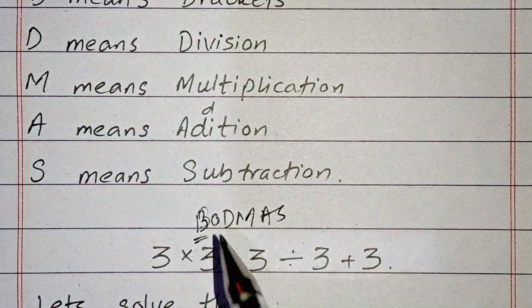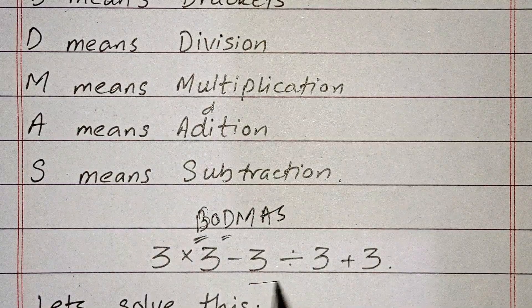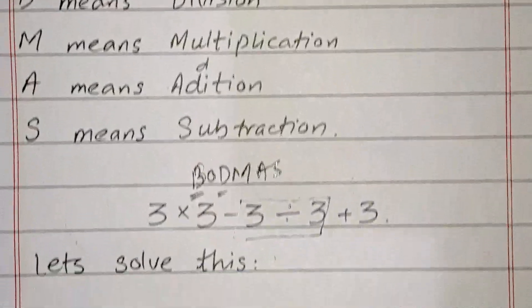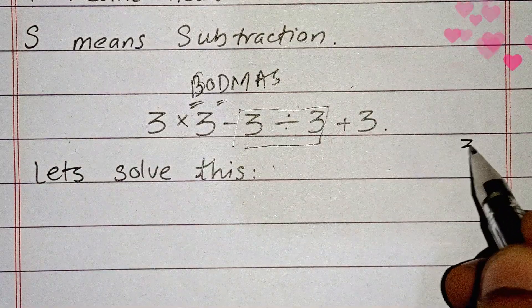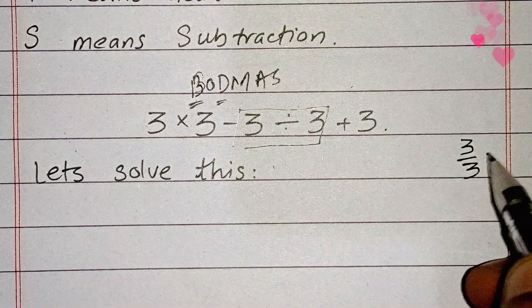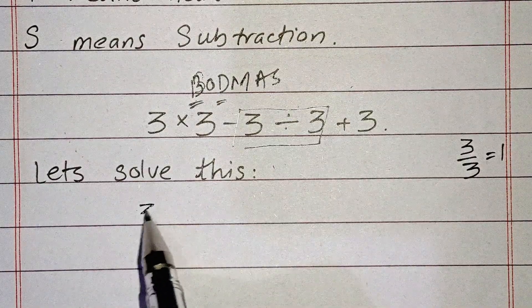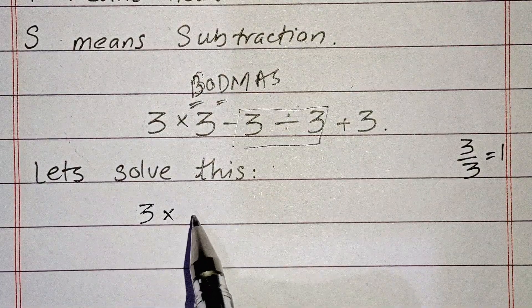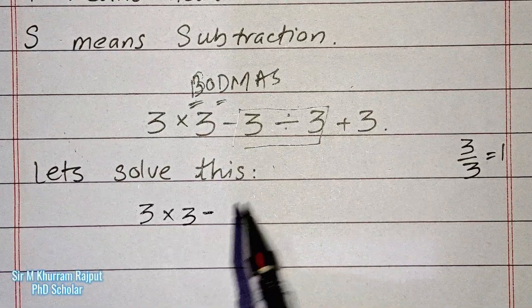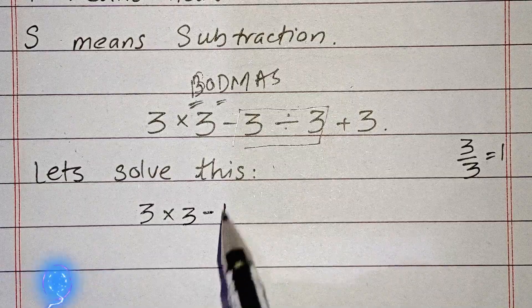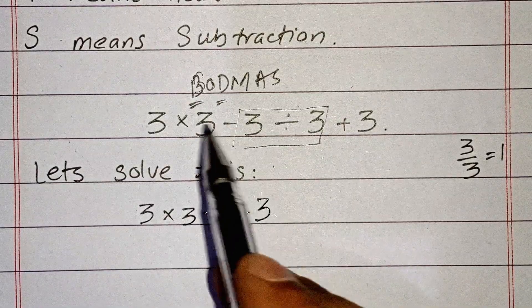After solving brackets, you have to go for division. So you have to solve this part. Everybody knows 3 divided by 3 is 1. So the equation becomes 3×3-1+3.